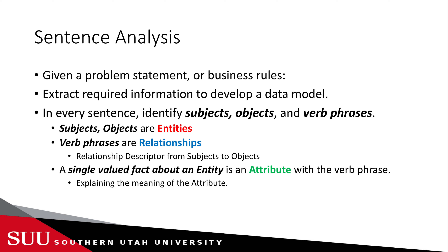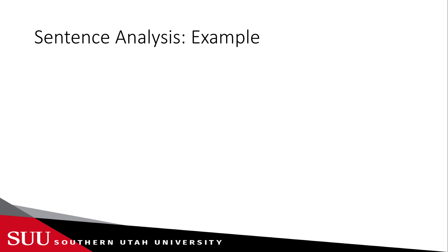Let's look at an example and try to extract entities, relationships, and attributes. I'm going to use color codes: entities are highlighted in red, relationships are highlighted in blue, and attributes are highlighted in green. In the first slide I'm not highlighting anything — we are just going to read the statement.